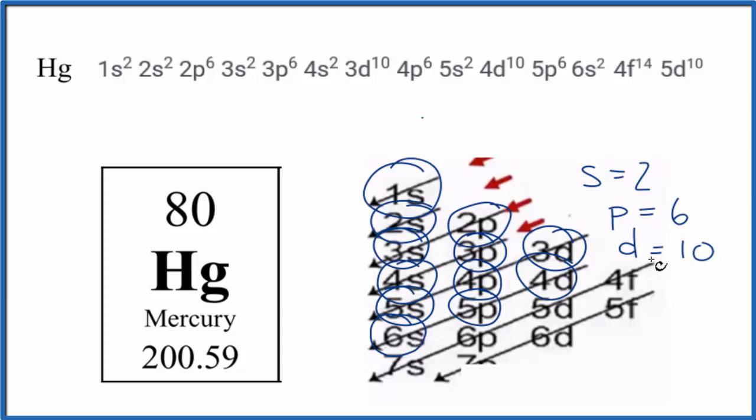From the 6s, we go to 4f. F can hold up to 14. Here's our 4f. 4f goes to the 5d, and we put 10 in that, and this is the electron configuration for mercury. All these superscripts add up to 80. That's the number of electrons.